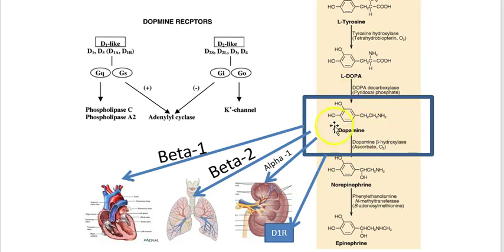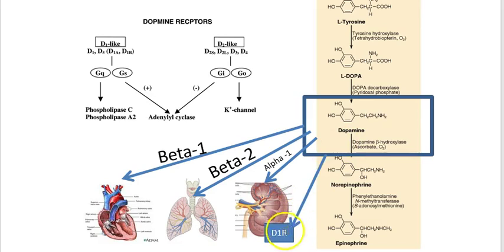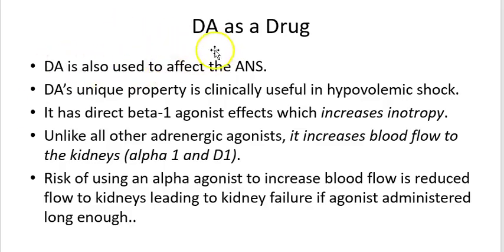Dopamine as a drug is actually really beneficial in the context of shock. The signaling pathway through dopamine receptors is very similar to how beta receptors operate. Dopamine has positive effects on beta-1 at the heart, beta-2 in smooth muscle and bronchi of the lung, alpha-1 in the arterioles and arteries of the kidney, as well as dopamine receptor subtypes in the kidney. Dopamine will affect the autonomic nervous system, and its unique properties show really good clinical benefits in patients with hypovolemic shock.